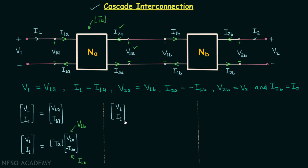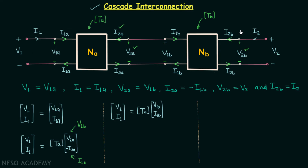So in the next step, the left-hand side matrix has elements V1 and I1, and on the right-hand side we have matrix TA multiplied by a 2×1 matrix with elements V1b and I1b. We can write this matrix equal to the product of the T parameters matrix of network NB and the 2×1 matrix with elements V2b and I2b with a negative sign.